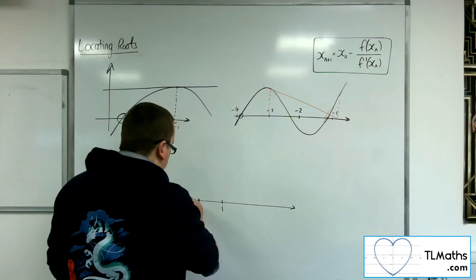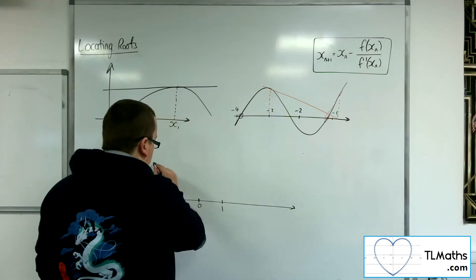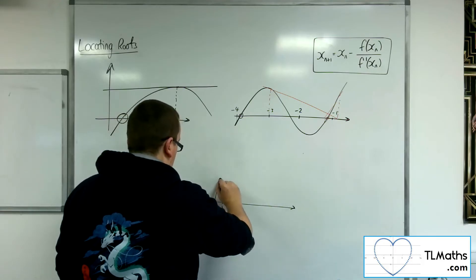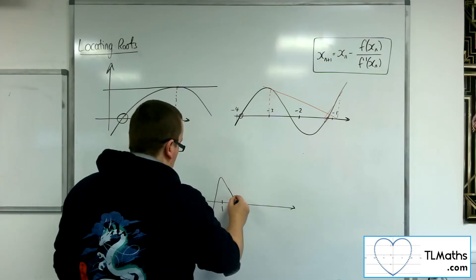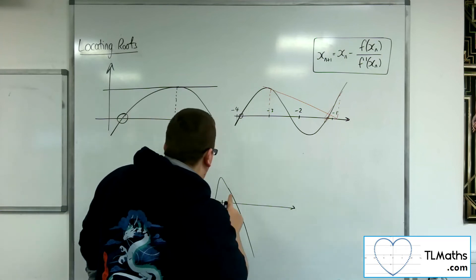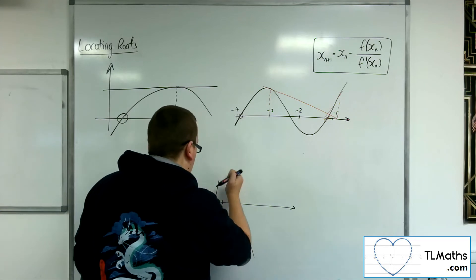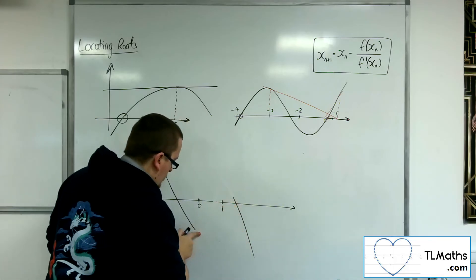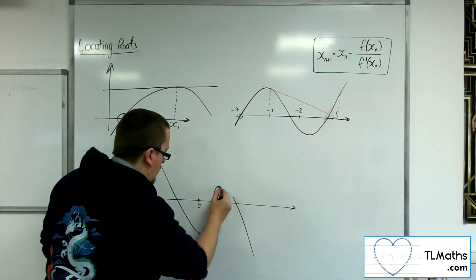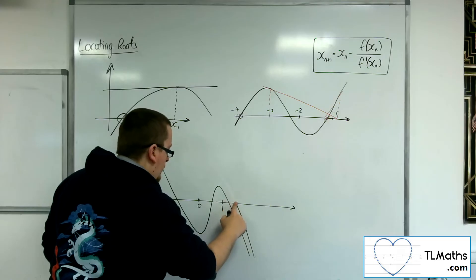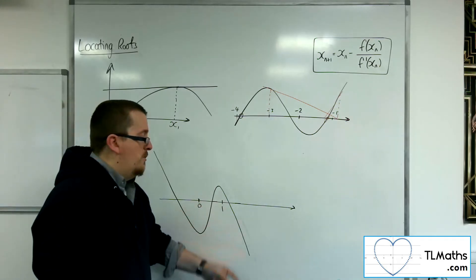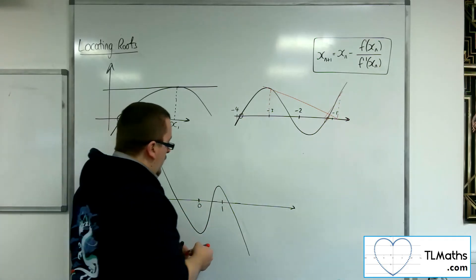If the curve, so let's say the curve looks something like this. So it has a very tight turn between 0 and 1. That's not particularly good. Let me try that again. So I want to turn just there. Something like that, that's a bit smoother. So I know that there's a route between 0 and 1. The change of sign method tells me that there is.